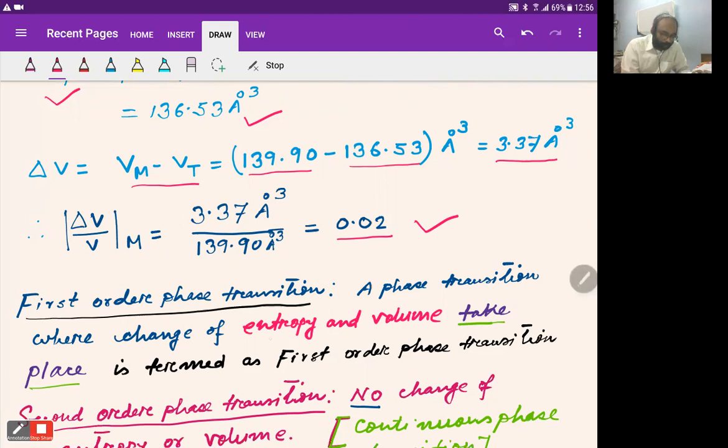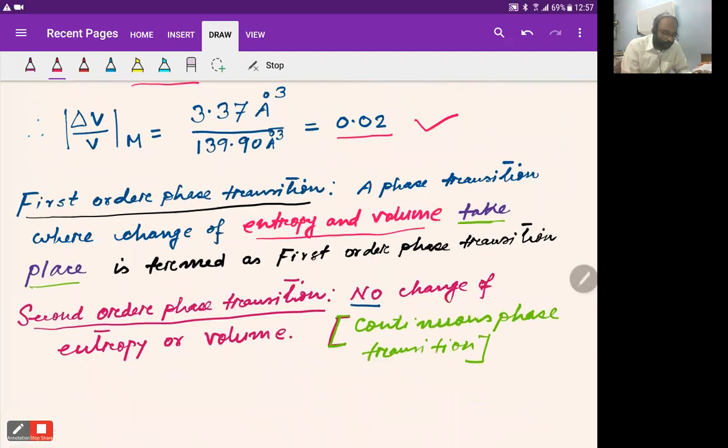entropy and volume change. In the case of second-order phase transition, there is no change of entropy or volume, and second-order phase transition is also known as continuous phase transition.